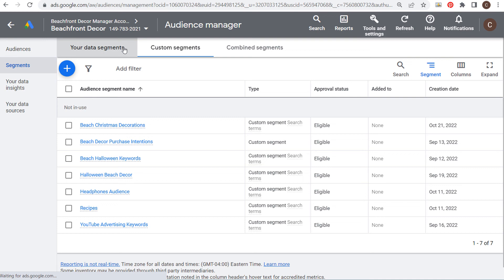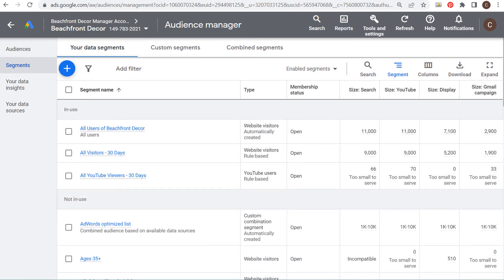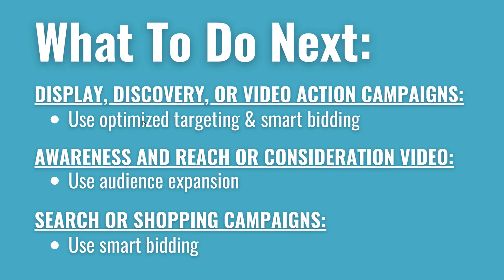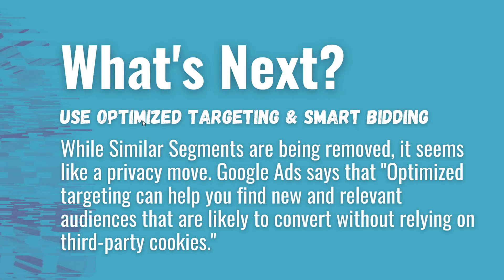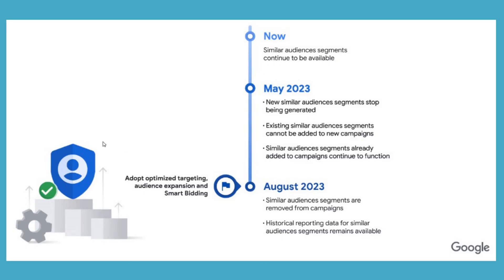These are some different ways to look at the changes Google Ads is implementing. You won't have similar segments available anymore, but with optimized targeting Google Ads will essentially do the same thing without using third-party cookies — that's the privacy issue. By August 2023 they'll be completely removed. In the meantime, monitor your performance and see if anything changes. Make sure you're using custom segments and your data segments, as those are not going away. If you have questions, leave them in the comments. Thanks for watching — make sure you subscribe to the Surfside PPC YouTube channel.